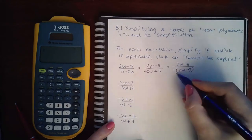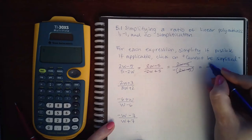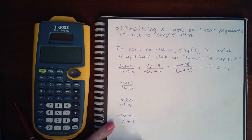Then this factor will reduce with this factor, leaving me with an invisible one on top over a negative invisible one on the bottom, which means the result will be negative 1.